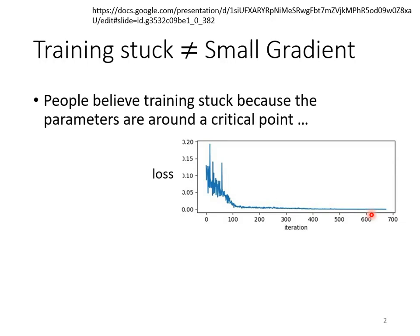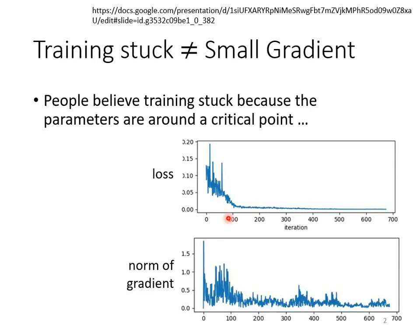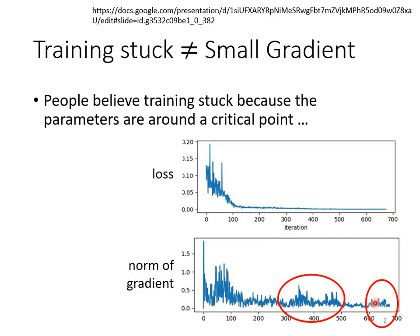At that point, most people guess that training has reached the critical point, where the gradient equals zero and we can't update parameters anymore. But is it true? When we say we've reached the critical point, the gradient is very small. But have you ever confirmed that when your loss no longer reduces, the gradient is really that small? In fact, most people have not confirmed this. In this example, when our loss no longer reduces, the gradient doesn't become very small, actually.